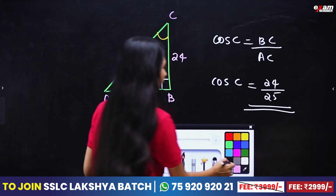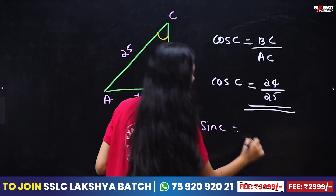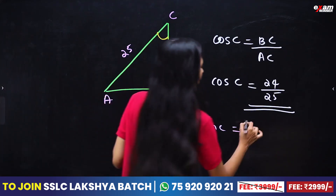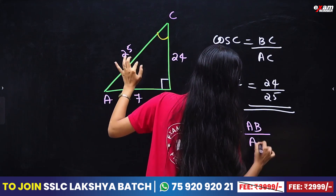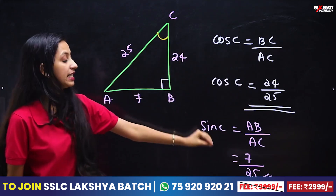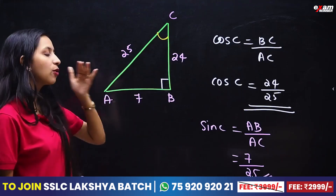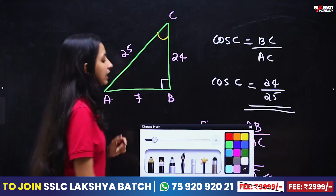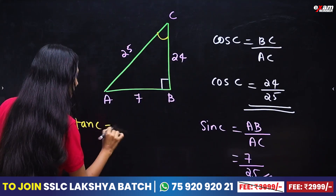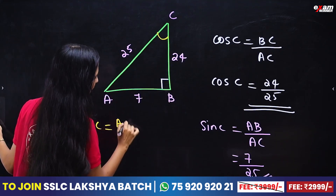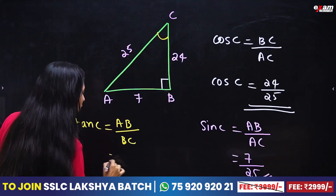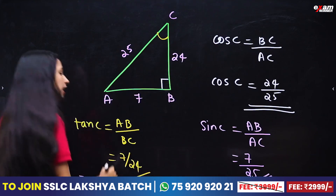Sin C is equal to the opposite side by hypotenuse. The opposite side is AB, which is 7, and the hypotenuse AC is 25. So sin C is 7 by 25. Tan C is the opposite side AB by adjacent side BC, which is 7 by 24.